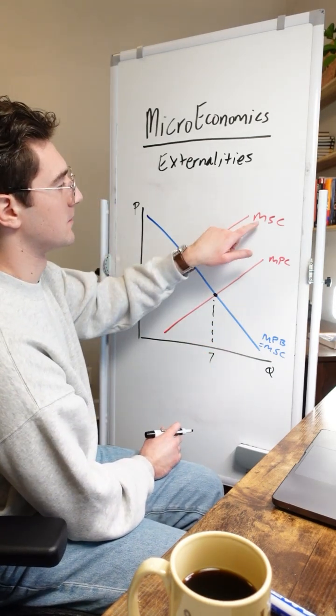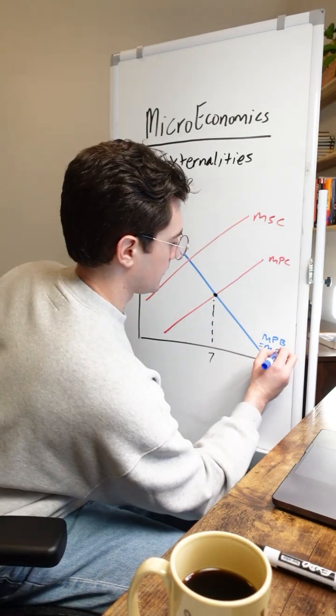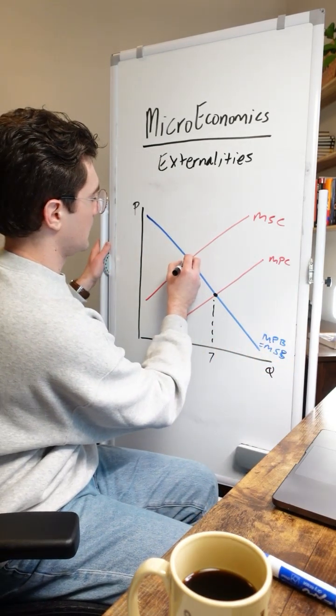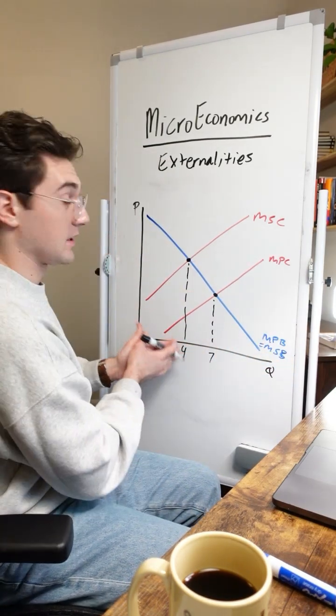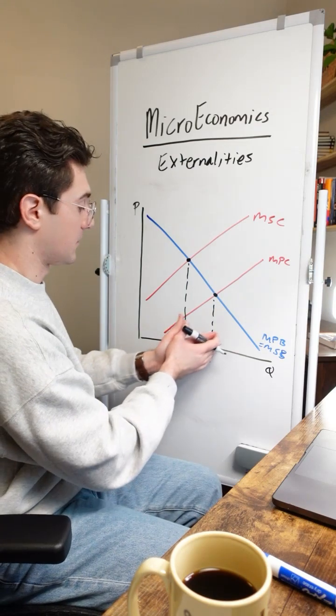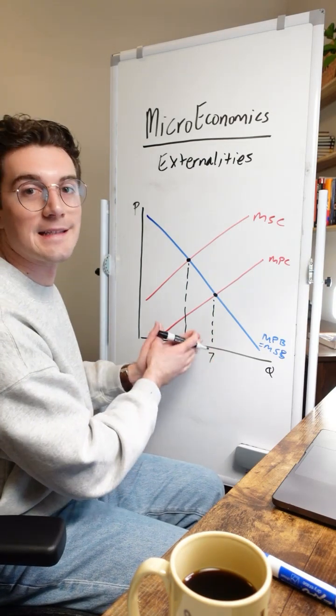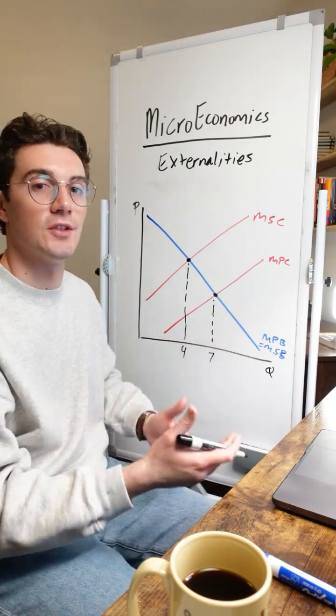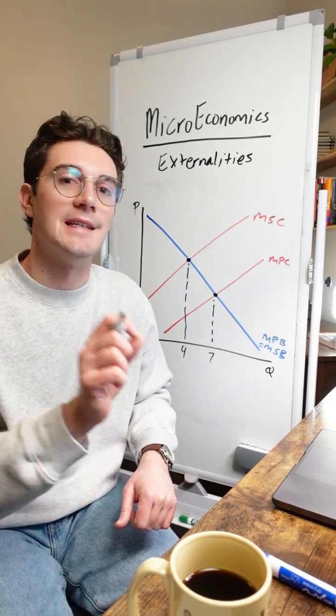And the socially optimal point is the marginal social cost curve and the marginal social benefit. All right, so that intersection point happens right here. We'll say corresponding to four units. Society wishes that four units were outputted but the private market's outputting more at seven. Society wishes that less of this good were outputted and in turn this is a negative externality.